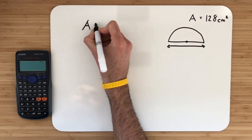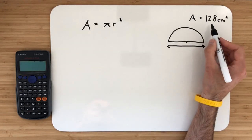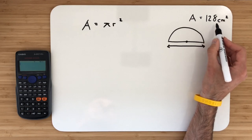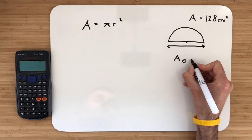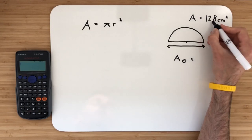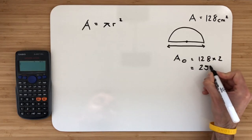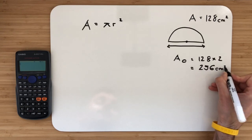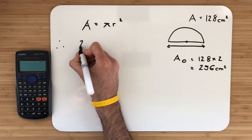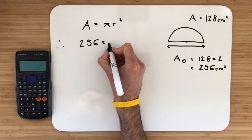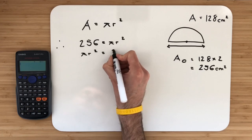To begin with, A is equal to π r squared. Now this is for a full circle. We've been given the area of the semicircle as 128 square centimetres. So from there, the area of the full circle is going to be 128 multiplied by 2, which is 256 square centimetres. So the area of the full circle is 256 square centimetres. So if we come back to our formula, therefore 256 is equal to π r squared. Let's flip this round. π r squared is equal to 256.